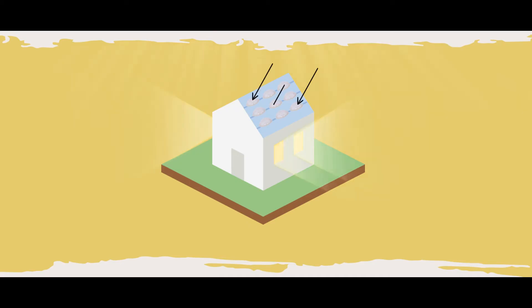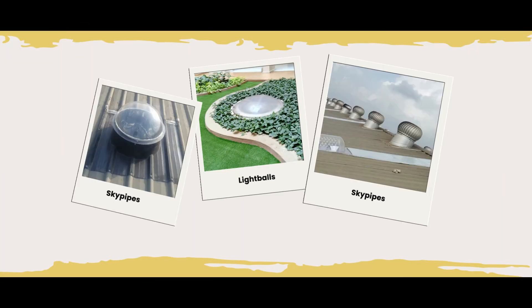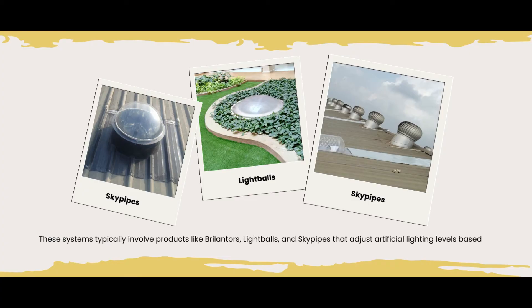This innovative technology harnesses natural sunlight to illuminate interior spaces, creating a more pleasant and eco-friendly environment. These systems typically involve products like bi-frilectors, light balls, and sky pipes that adjust artificial lighting levels based on available natural light.